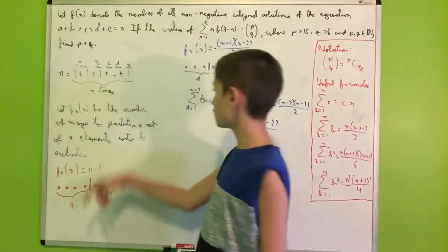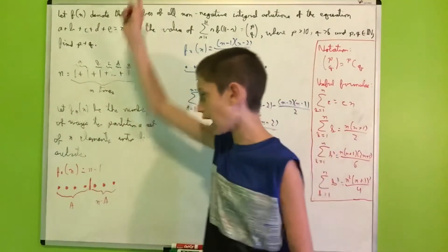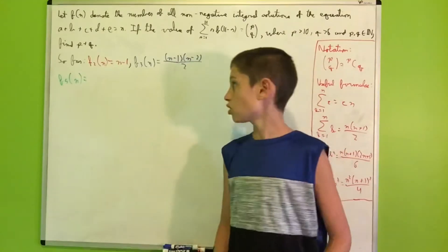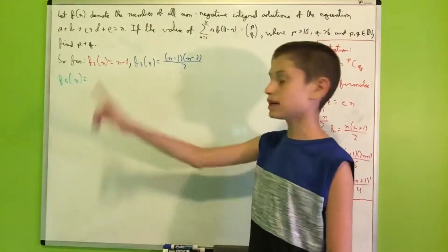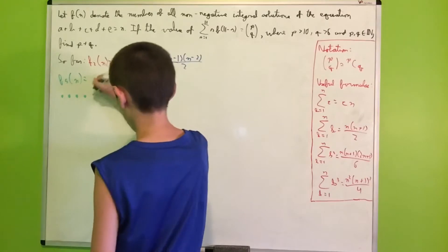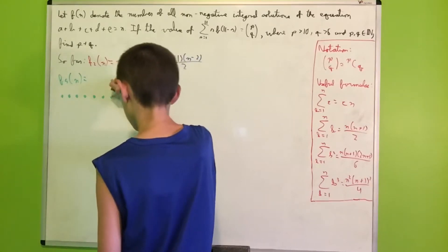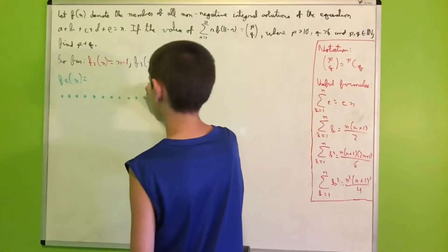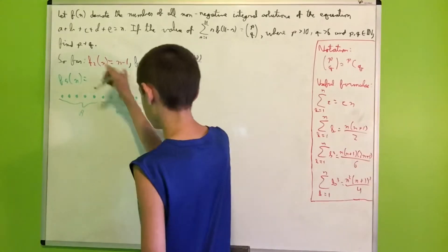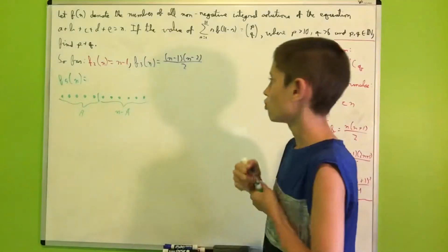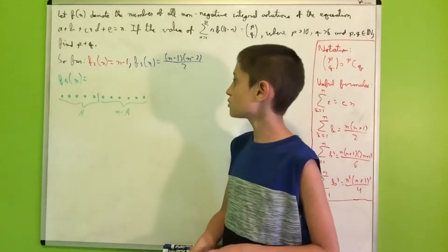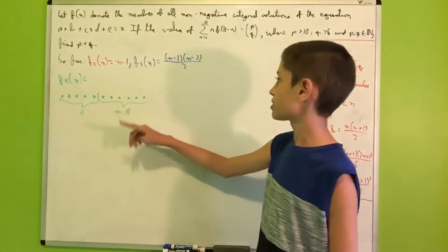Now that we have f_2(n) and f_3(n), we can find f_5(n), which is exactly our f(n). Let's draw our set of n elements. Say one subset has 'a' elements, leaving n − a elements. We'll partition the first into three subsets and the second into two subsets, giving five subsets total.